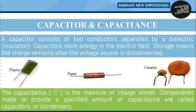A capacitor consists of two conductors separated by a dielectric. Capacitors store energy in the electric field. Storage means the charge remains after the voltage source is disconnected. In DC circuits, capacitance is only effective when the voltage is switched on and off. But in AC circuits, where the voltage varies continuously, the effect of capacitance is continuous.